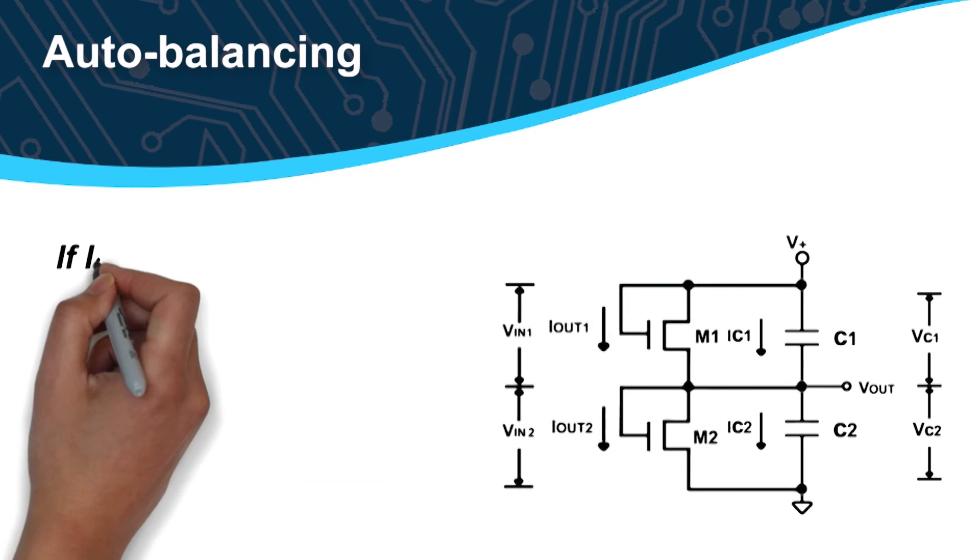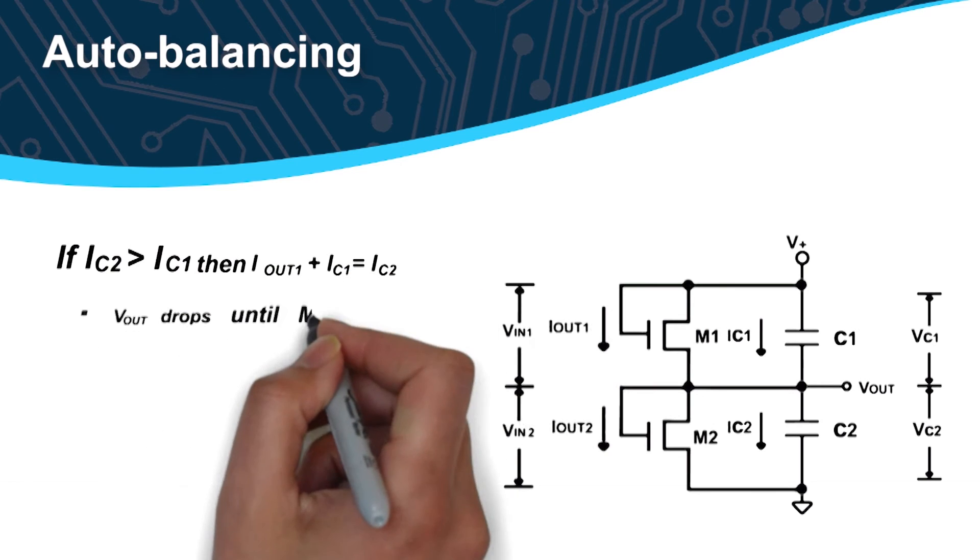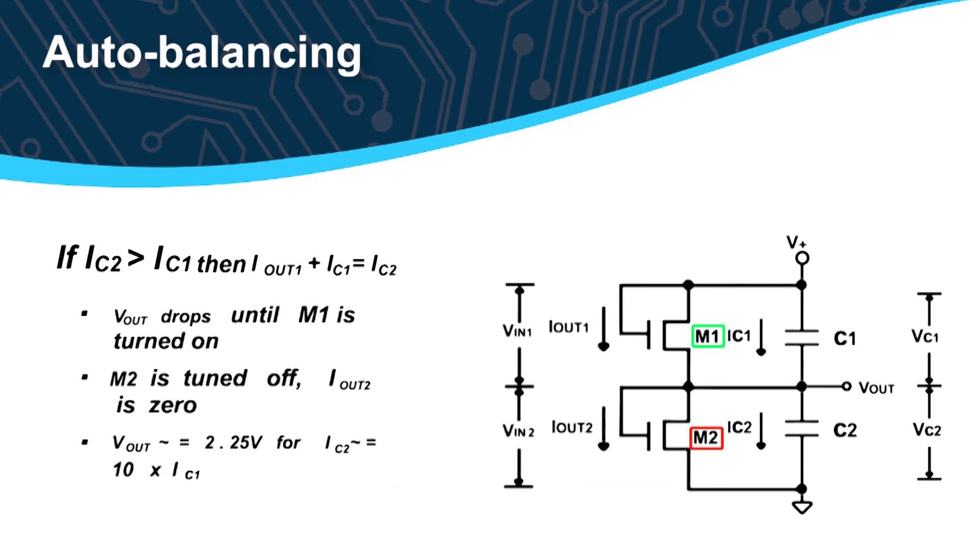The exact opposite takes place when IC2 is greater than IC1, when M2 is turned off and M1 is turned on to prevent C1 from over-voltage and eventual destruction.